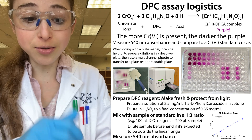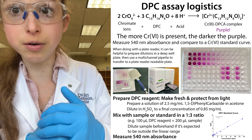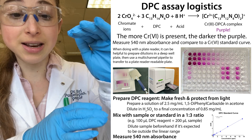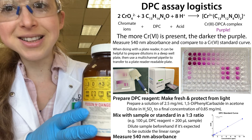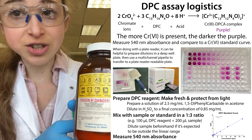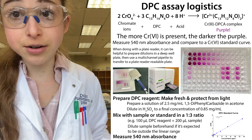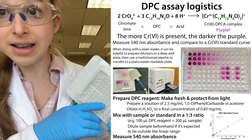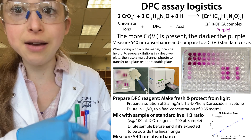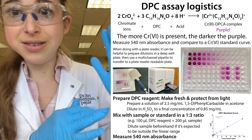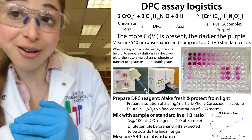It's important to have controls: we measure the chromium in the media — the food the bacteria are growing in — to establish how much was there to begin with, then see how that changed in the presence of bacteria. Using the standard curve, you can calculate the amount of chromium remaining after the bacteria have done their work, and we'll have to see what the results show.